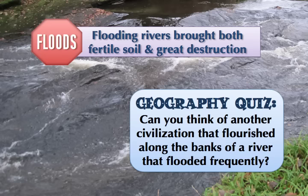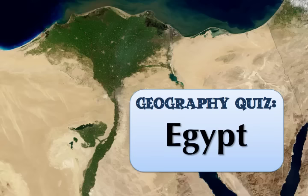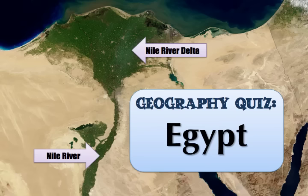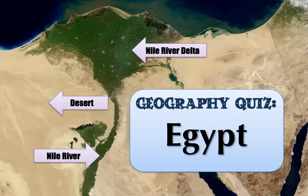Does this sound like any other civilization you've studied before? Probably the most famous example of a river that floods but allows a civilization to exist there would be Egypt. Here's a satellite image looking down on Egypt, and you can clearly see the location of the Nile River because along it we see a green area — land that's been irrigated by the waters of the Nile River. That farming wouldn't be there without the Nile River. Look at the area surrounding it: all we see is vast open desert, but near the Nile River we see lush green farmland. We see something similar happening in China as well.